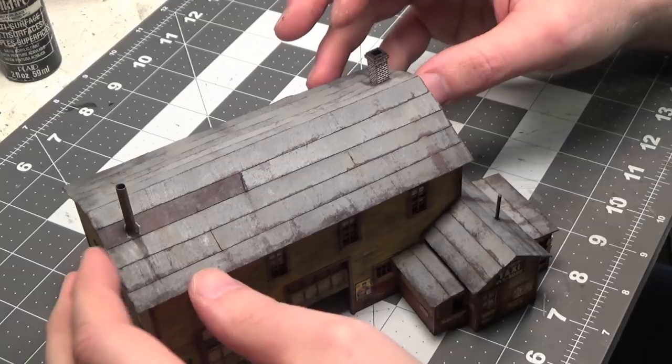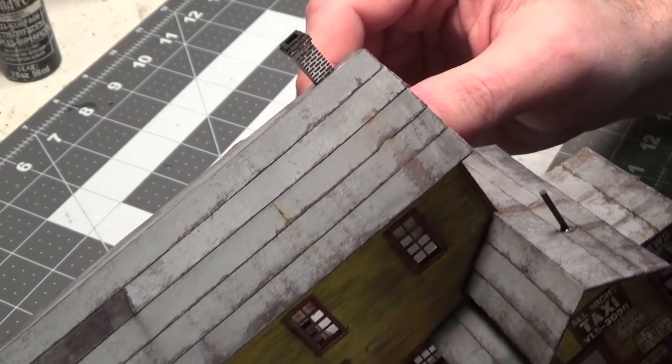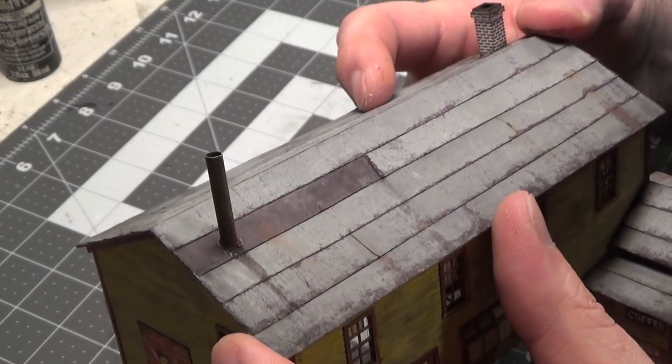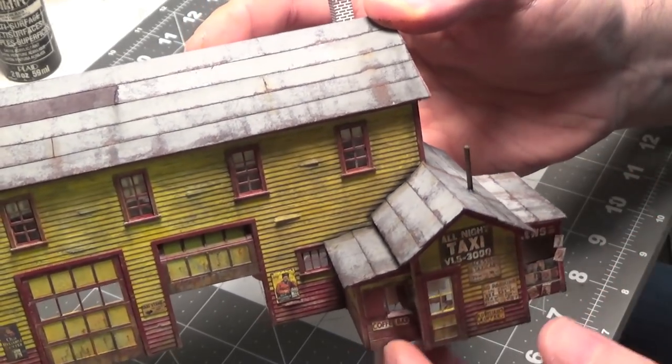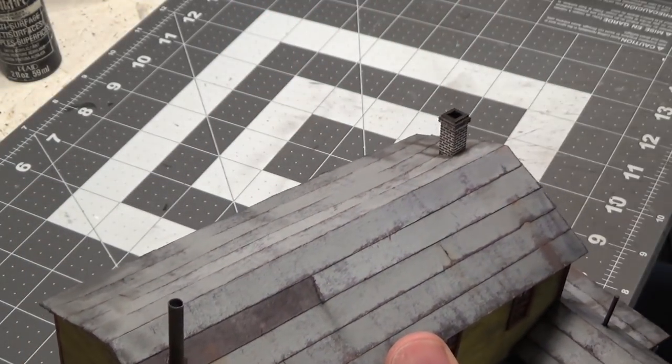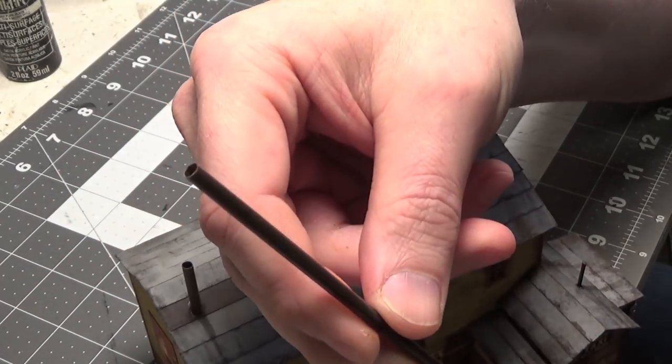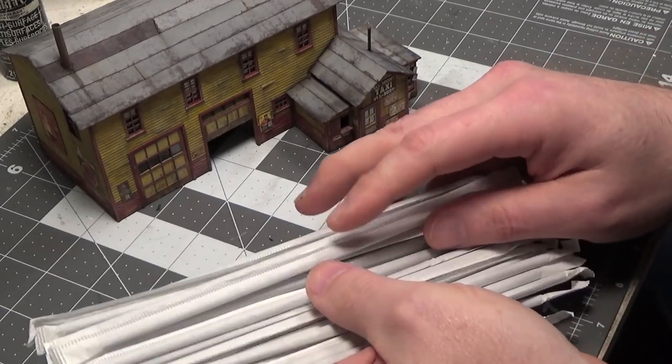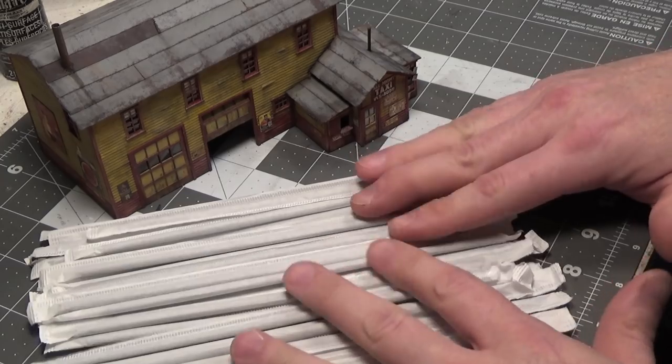So the smokestack and chimneys are in place. The smokestack came with the kit. And for the smokestack here, I just used a drinking straw. And then for this smokestack, it's just a round piece of plastic. The drinking straw is actually this right here. And Burger King actually has these. Here is my collection of Burger King straws. This will last me the rest of my life.